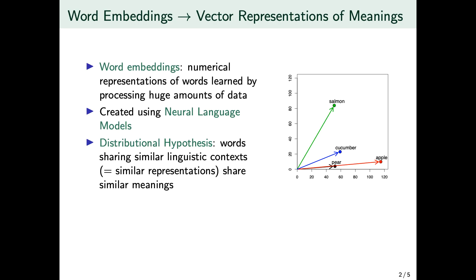Let me start by introducing the element that I will analyze in this study, and I'm talking about word embeddings. Those are numerical representations of words that are learned by processing huge amounts of data. Even though there are different ways of building those vector representations, nowadays it's very popular to use neural language models.